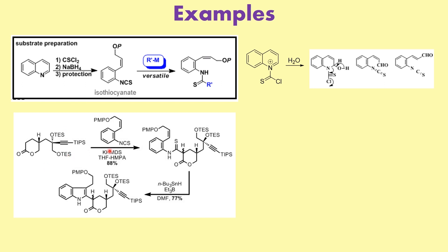What we have is this particular substrate and we are using KHMDS as a base. KHMDS abstracts the alpha proton, then the carbon attacks, and what we have formed is this particular thioamide. On the ortho position we have the olefin absolutely perfectly placed. When we carry out the radical cyclization, we can clearly see that at the C2 position we have introduced this moiety, which in normal cases would have been very difficult. Triethylsilyl, TIPS group, and PMP groups have all been tolerated throughout this radical cyclization.